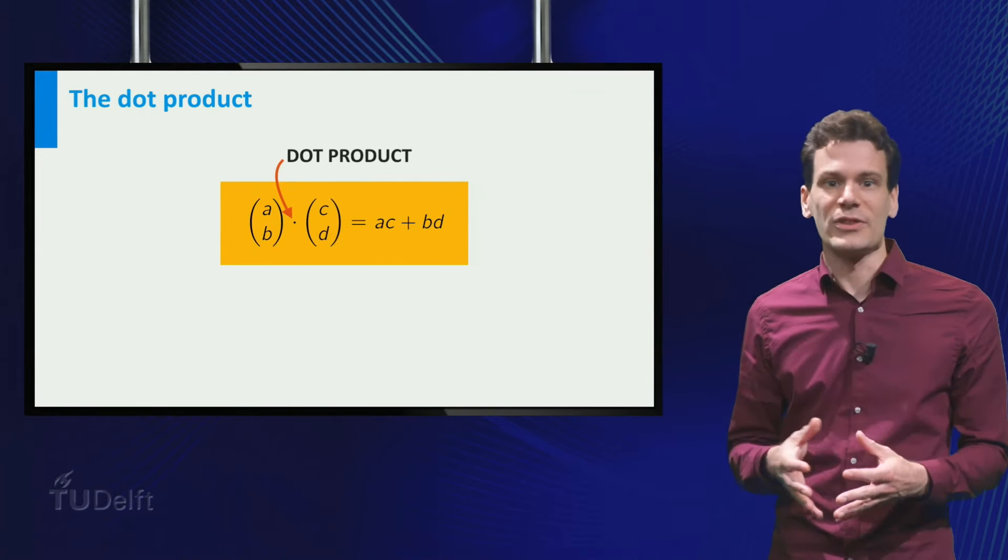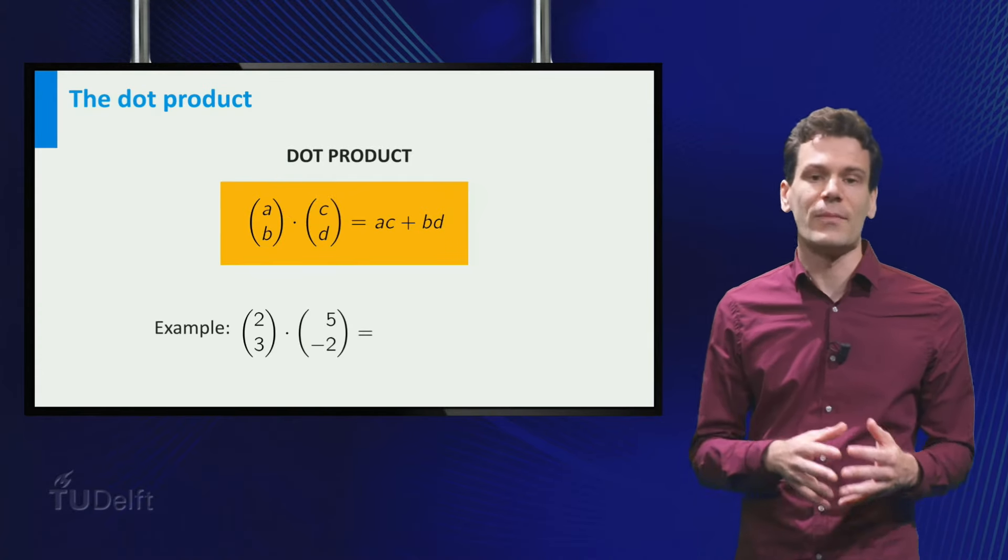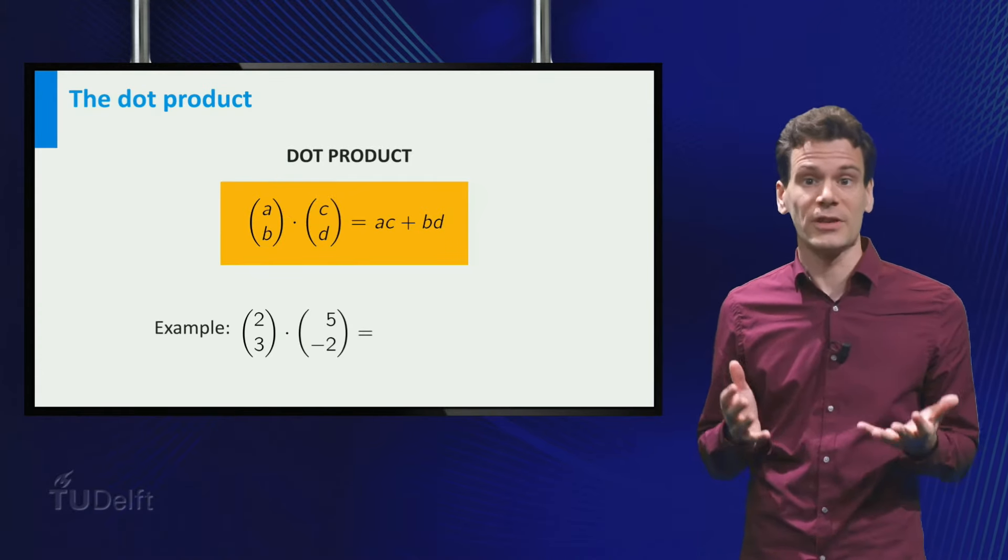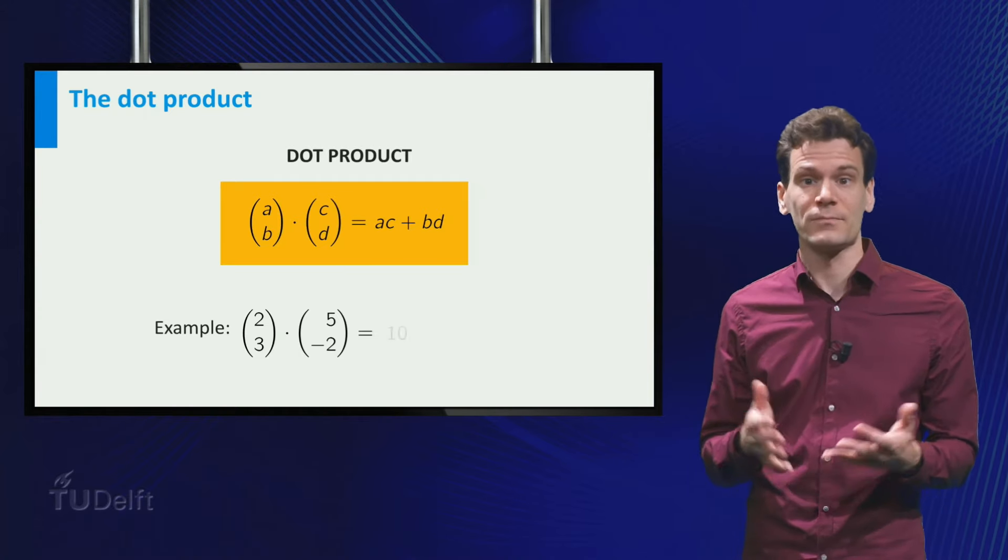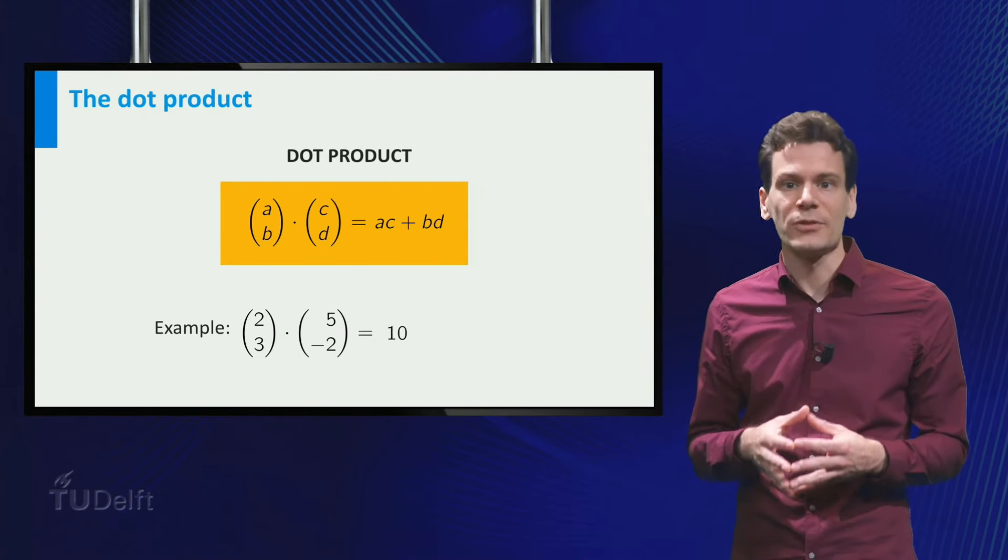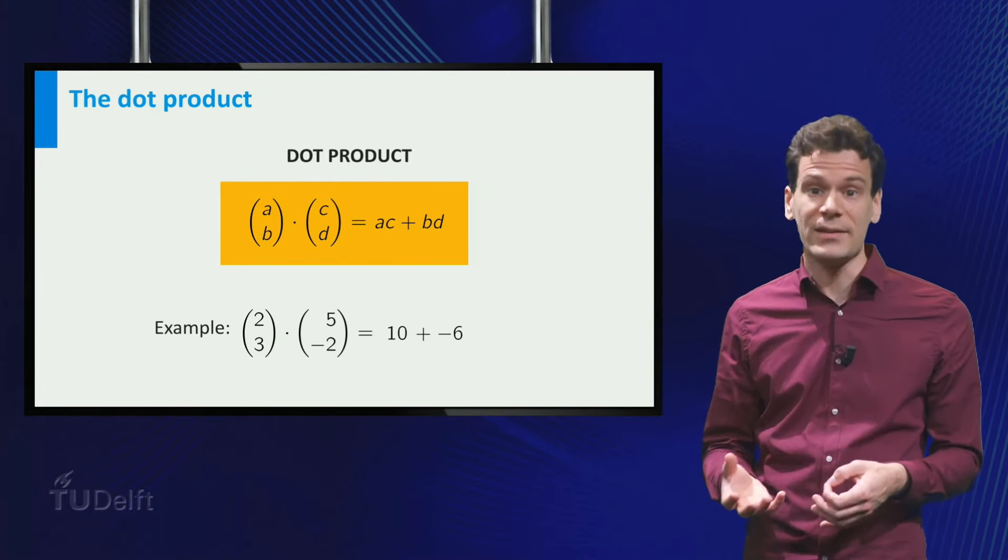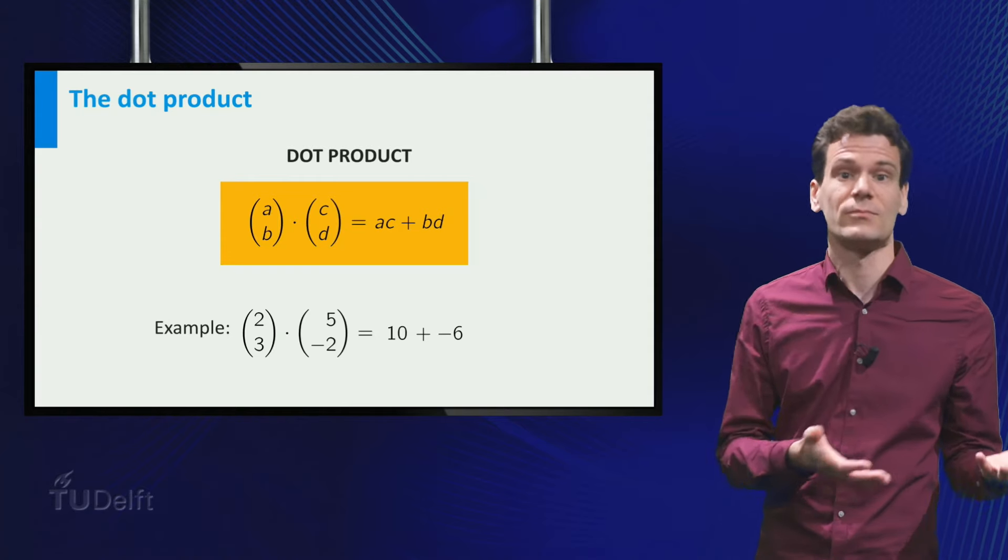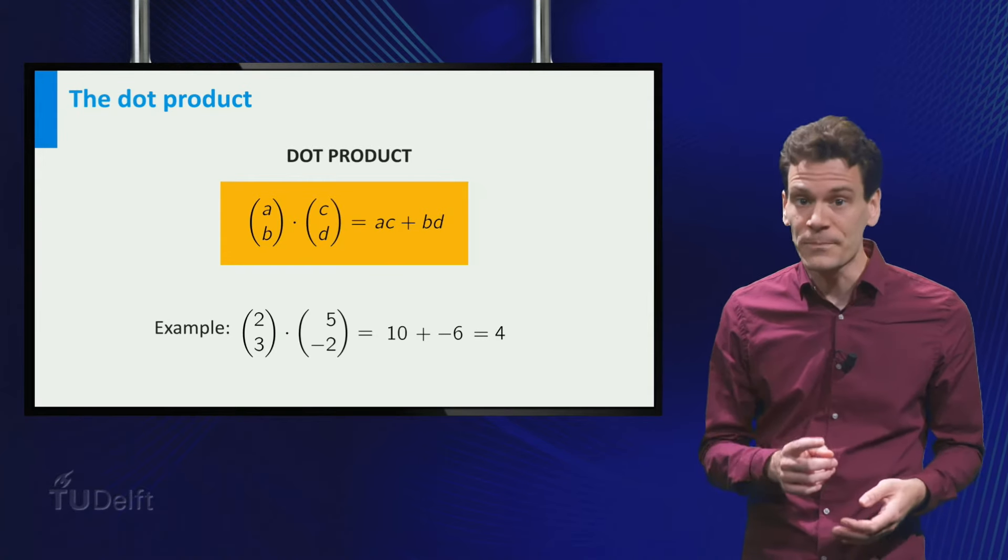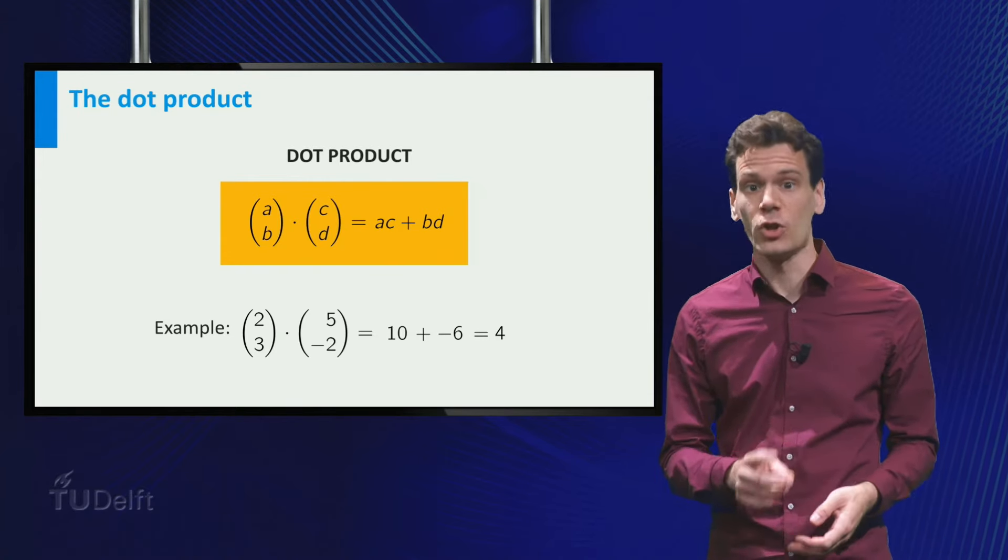This operation is called the dot product of the vectors and it is indicated with a dot. Let me show you an example. Consider the vectors (2,3) and (5,-2). The dot product is the product of the first components, which is 10, plus the product of the second components, which is minus 6. So it equals 10 plus minus 6, which is 4. Note, the result is a scalar, not a vector.